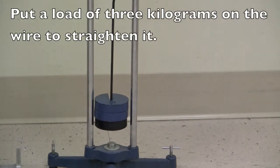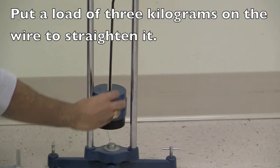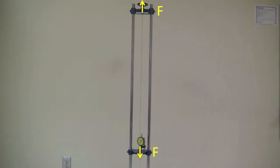Place 3 kg to straighten the wire. The wire is stretched by two equal forces from both sides. You have to measure the length of the wire under stress, which is not equal to the complete length of the wire.